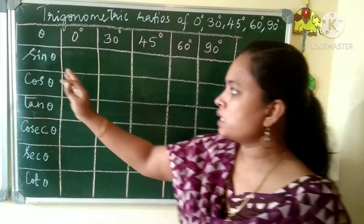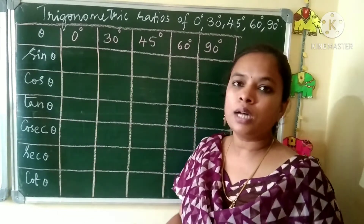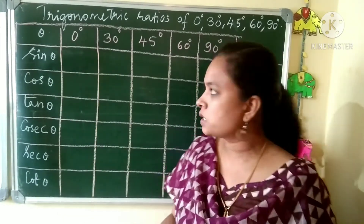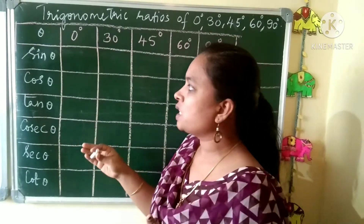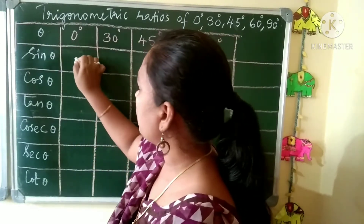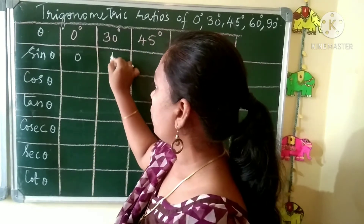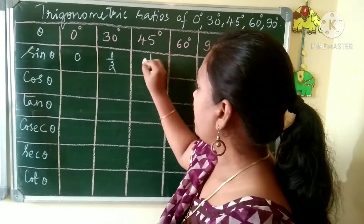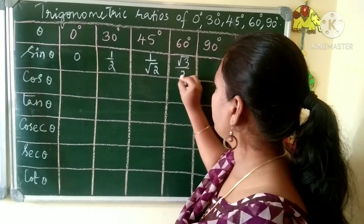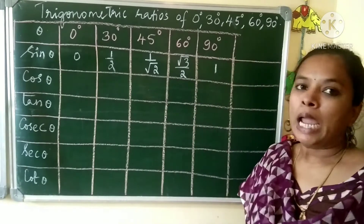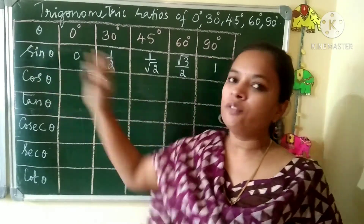Now we know what sin is. Once you know the sin values, all the other values you can write very easily. From the previous method I taught, you can easily remember: sin 0° = 0, sin 30° = 1/2, sin 45° = 1/√2, sin 60° = √3/2, and sin 90° = 1. For cos, you just write the reverse of sin.